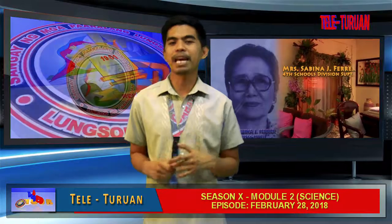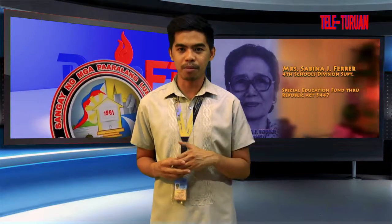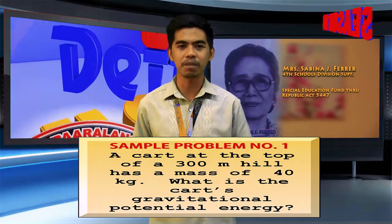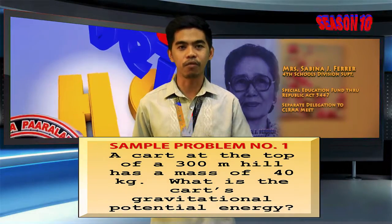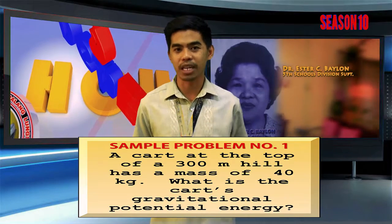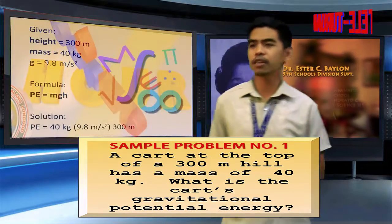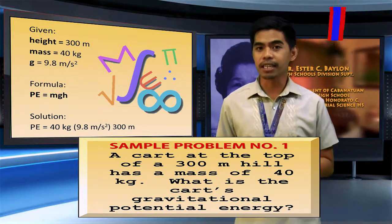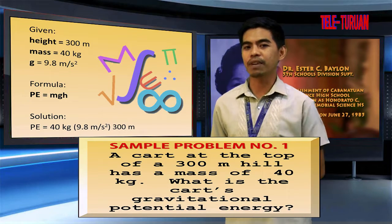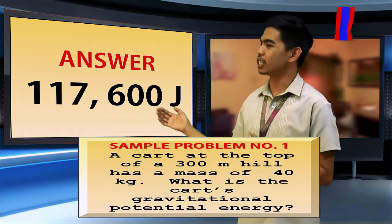Let us apply those formulas on our sample problems. Sample problem number one: a cart at the top of a 300 meter hill has a mass of 40 kilograms. What is the cart's gravitational potential energy? Using the formula Pe is equals to mgh, you may derive at an answer of 117,600 joules.